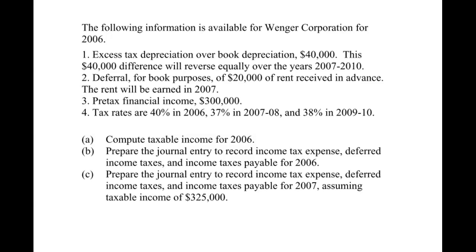I've done this before in other videos, but I just want to go over the shortcut I use again. If you take the taxable amounts less the deductions, that gives you taxable income. Taxable amounts are like revenue on the tax return, deductions are like expenses on the tax return, and taxable income is what we base our income tax payable off of.